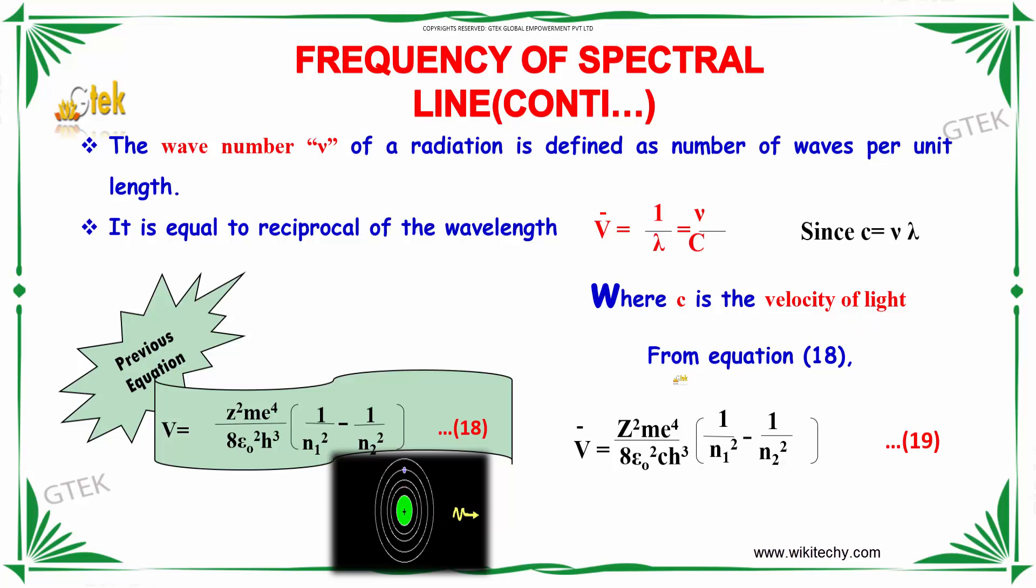From equation 18, ν̄ = Z²me⁴/(8ε₀²ch³) × (1/n₁² - 1/n₂²).